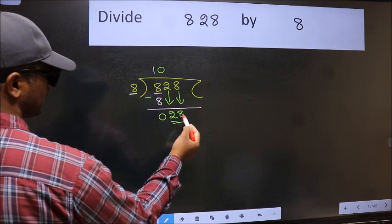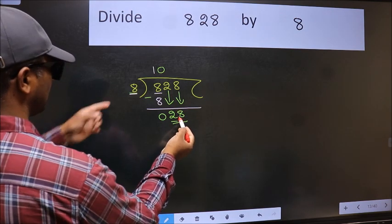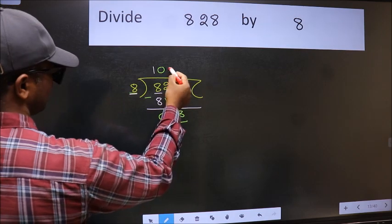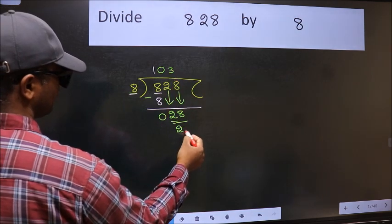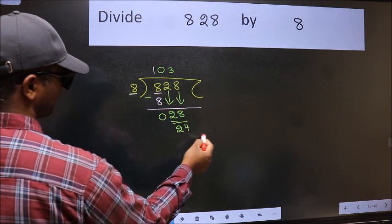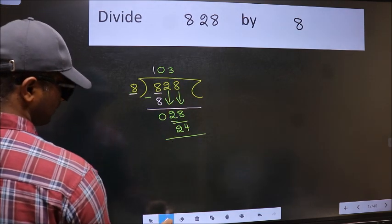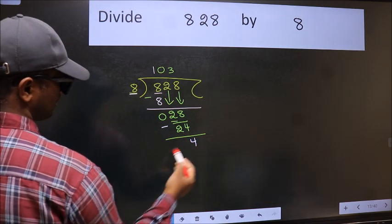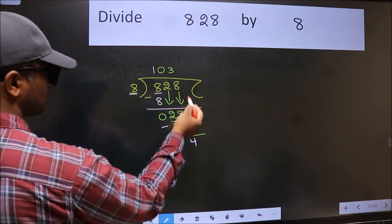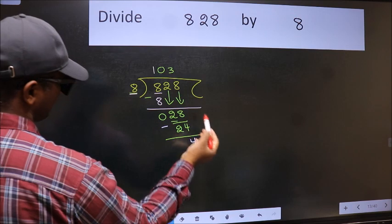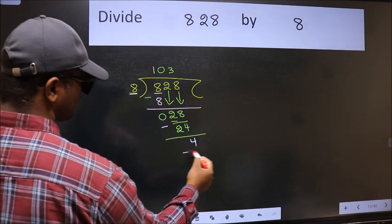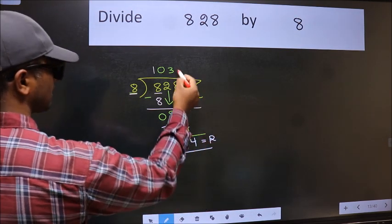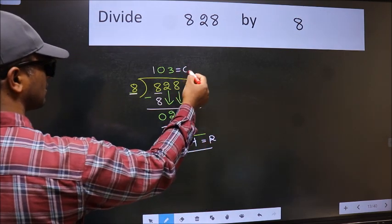Now 28. A number close to 28 in the 8 table is 8 threes, 24. Now we should subtract. We get 4. No more numbers to bring down, so we stop here. This is our remainder and this is our quotient.